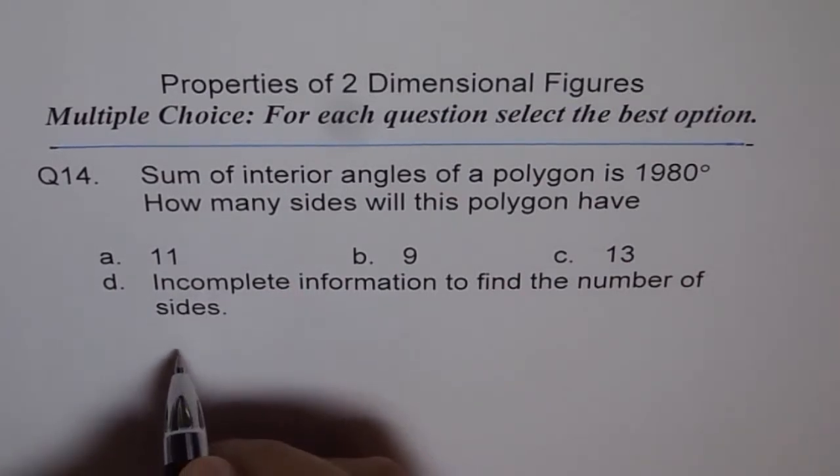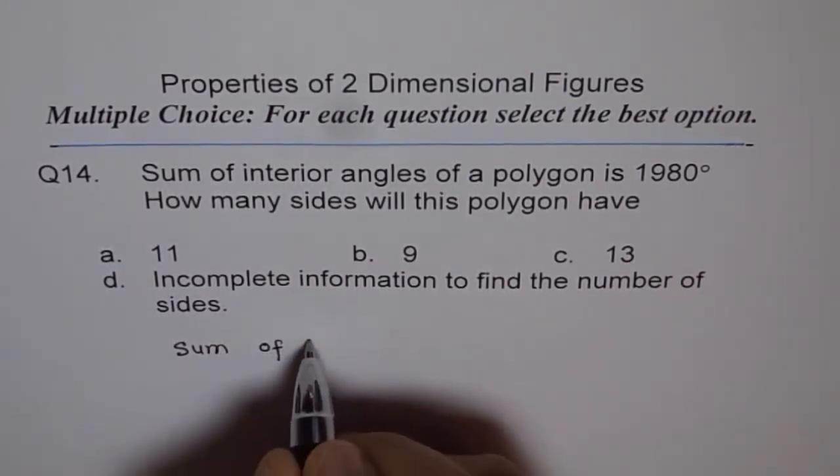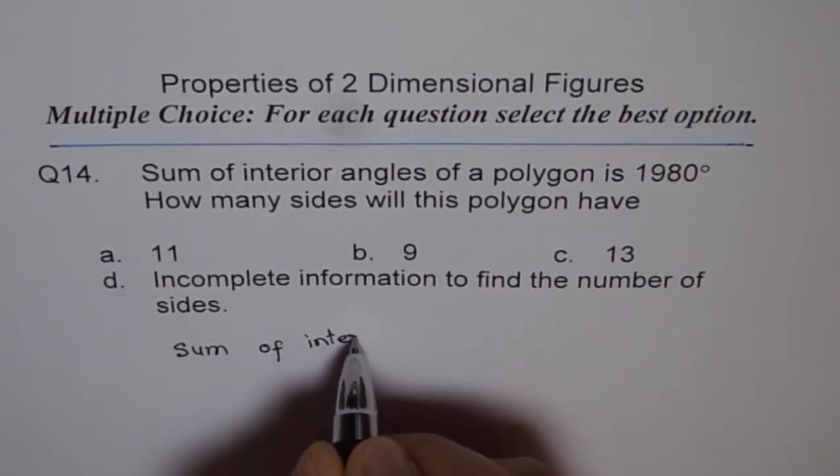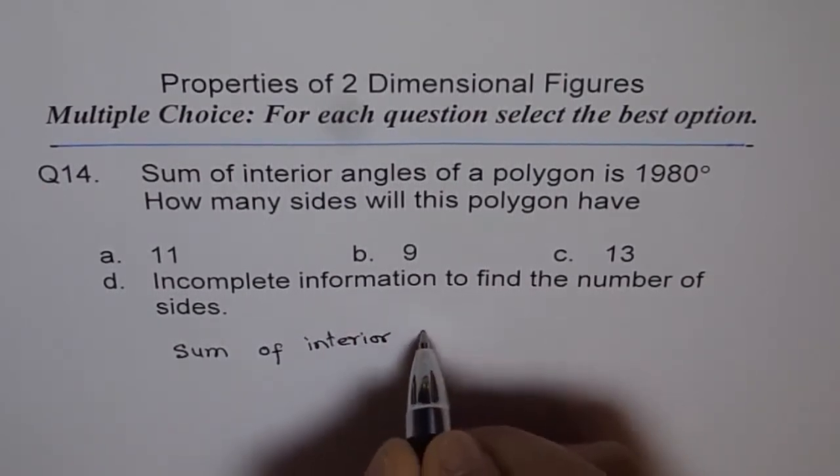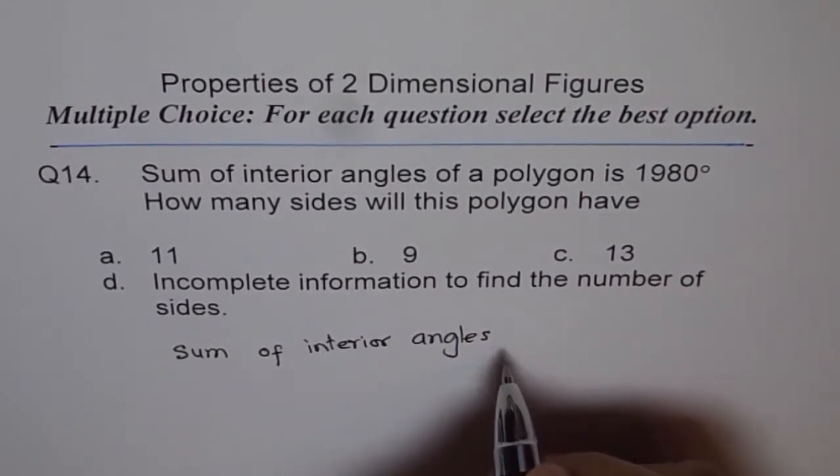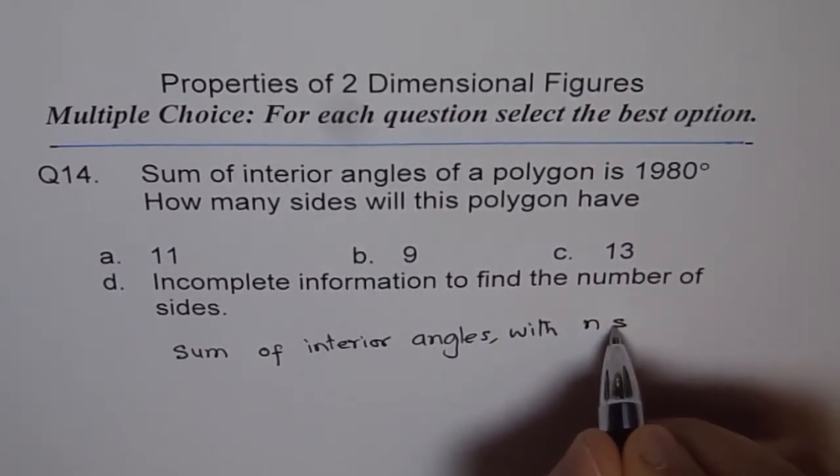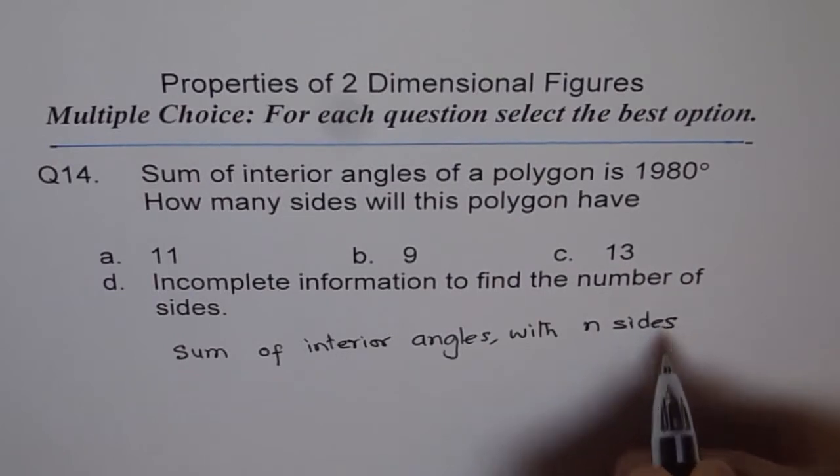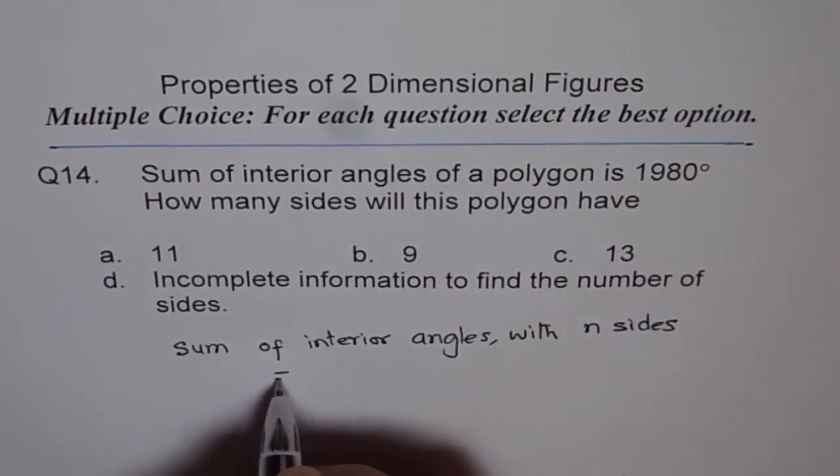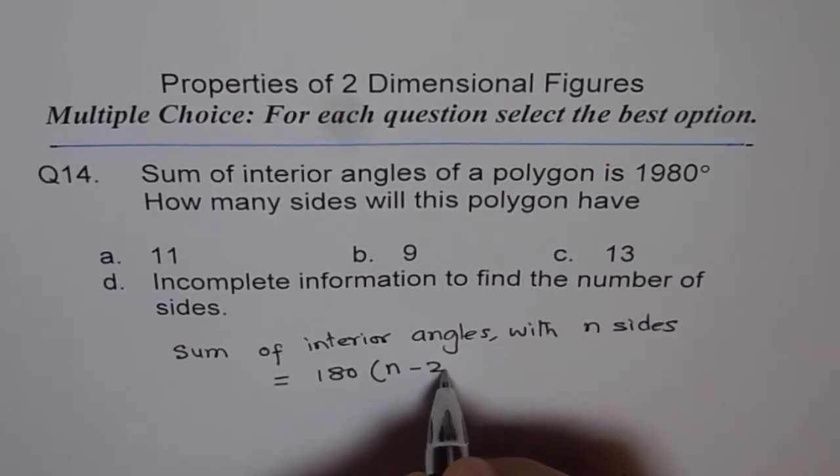The formula for sum of interior angles of a polygon with n sides is 180 degrees times (n - 2).